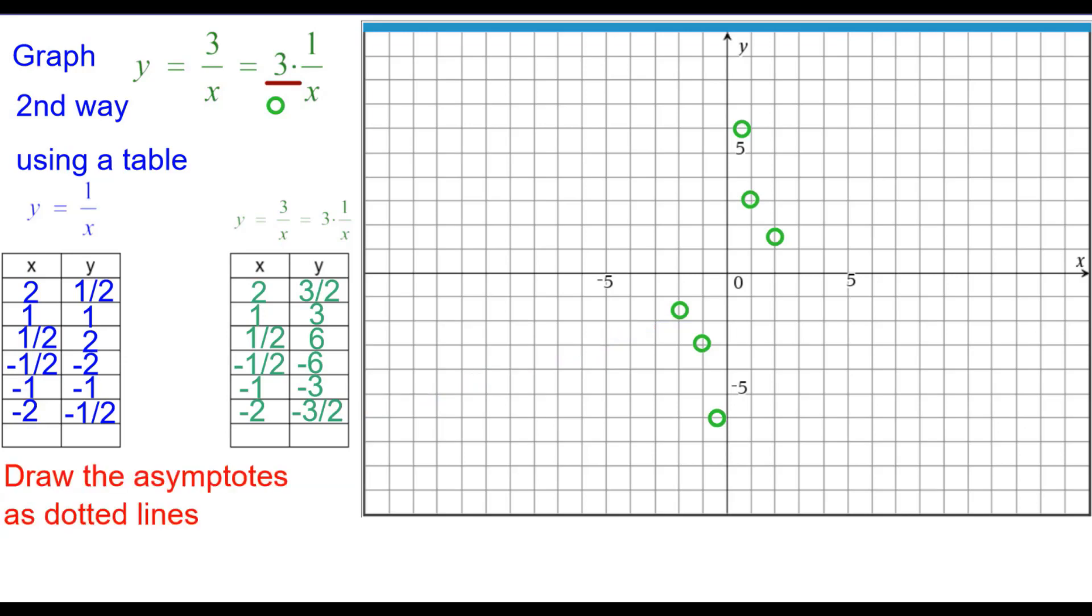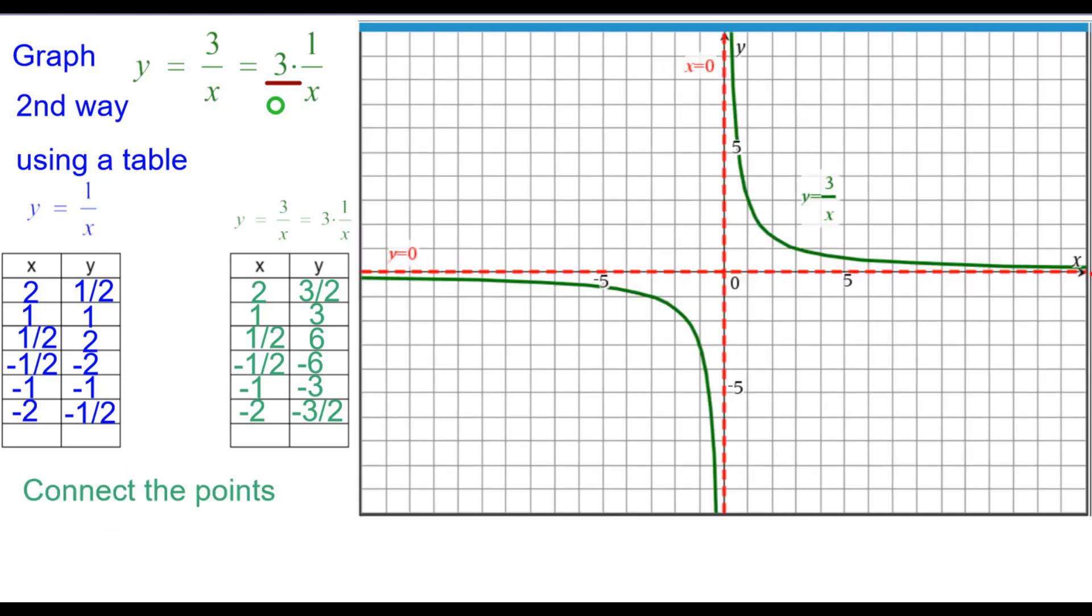Next we draw the asymptotes as dotted lines. First the x-axis, the line y equals 0. And the y-axis, the line x equals 0. Connect the points. We get the two branches of a hyperbola.